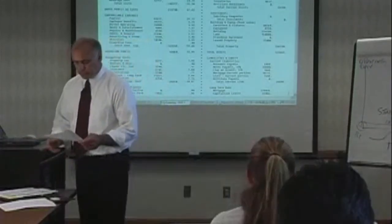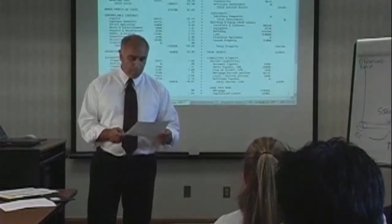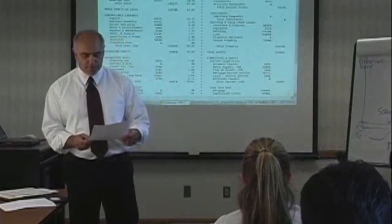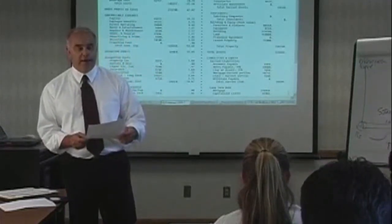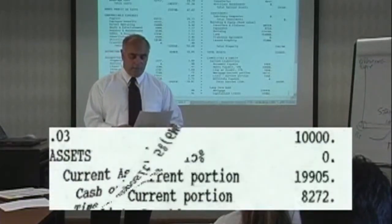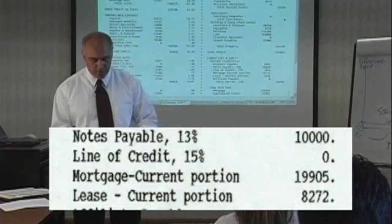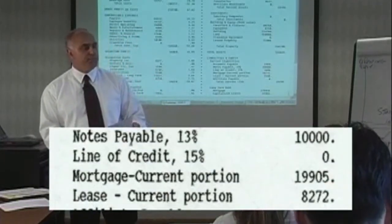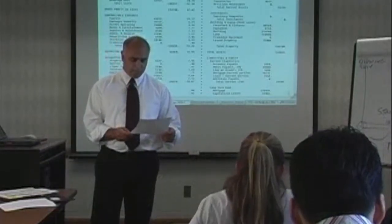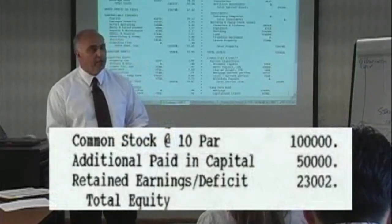The fourth quarter represents the final financial statements for the first year of operation, and business continues to improve. Profitability continues to increase, and we are accumulating additional cash — the cash balance is now $11,450. The note was paid down another $10,000 during the quarter, so the ending balance is $10,000. The line of credit is zero, and the mortgage and lease balances continue to decline. Our place is starting to hit its stride from a cash flow standpoint.